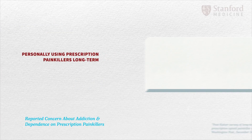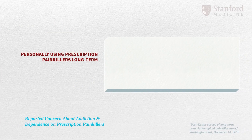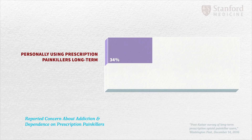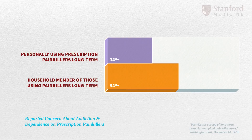A 2016 survey of people on opioids long term for chronic pain reported that only one-third of users said they were addicted, whereas more than half of people living with them suspected addiction. Family members were also far more likely to say the drugs damage the user's physical and mental health, finances, and personal relationships.